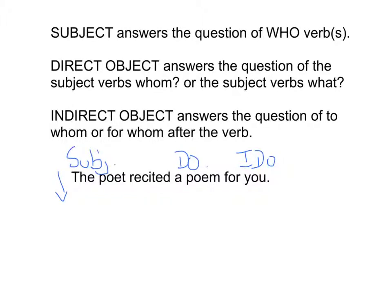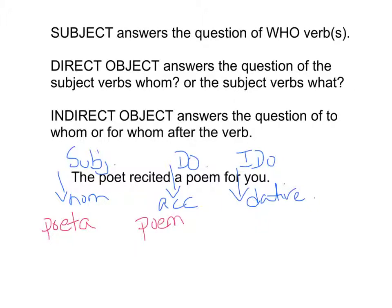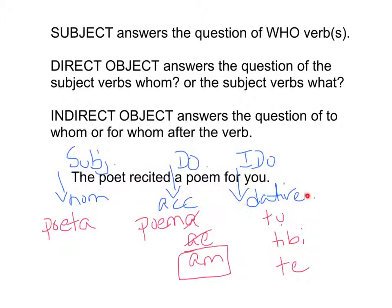The subject of a sentence is always nominative, the direct object is always accusative, and the indirect object is always dative. The poet — poetia — there's your subject. Your direct object is poem — poema, or poema-i, or poema-m. You know that the first two are trick endings, and poema-m is your accusative. And then for you, the chart gives you: tu, tibi, or te. We need the dative ending — tibi is dative, so the correct answer is tibi.